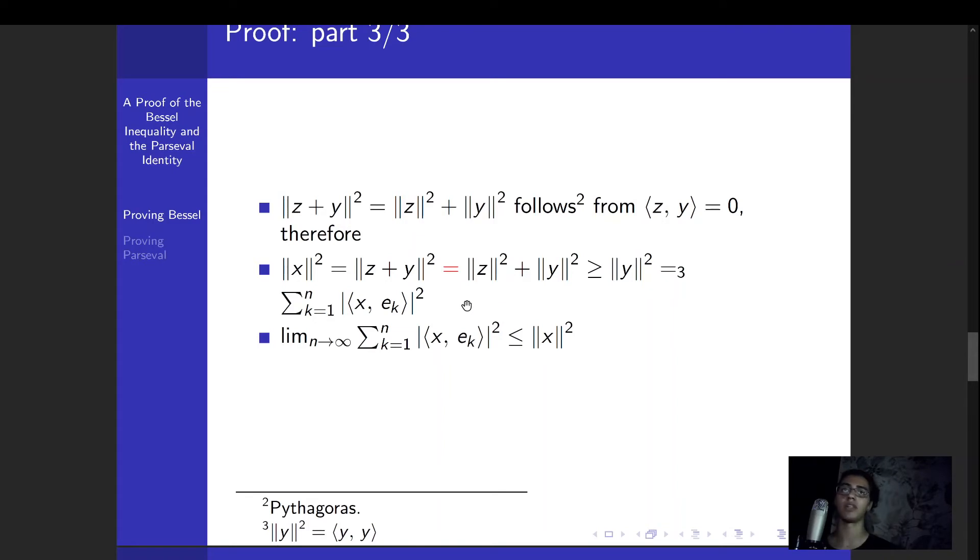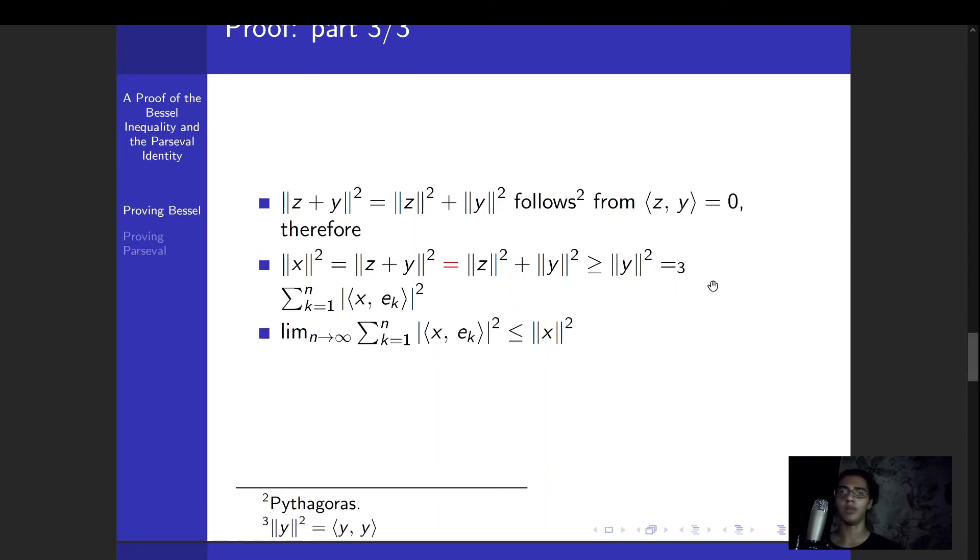The Bessel inequality essentially wants a bound of the norm squared of x. So we write down the norm squared of x, and we know that it's equal to this. We just rewrote x as z plus y. And now we applied Pythagoras, and we finally get our bounds. So we get a greater than or equal to the norm squared of y, because z squared is greater than or equal to zero. And we have this final step three here, just by rewriting the norm squared of y as the inner product of y with itself, and doing one little calculation, and we finally get to this.